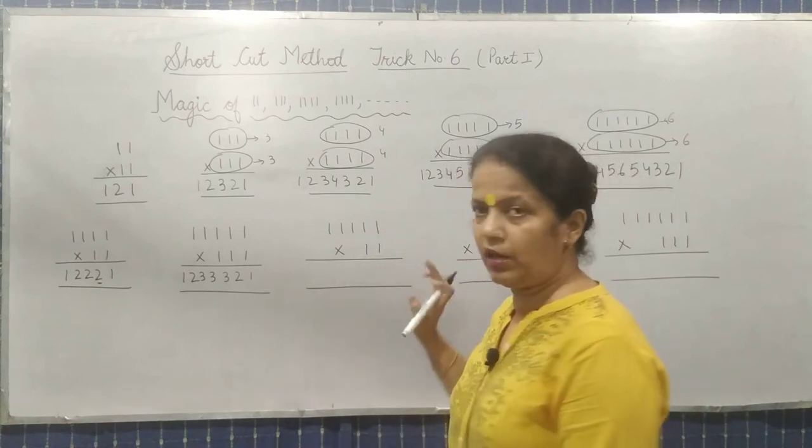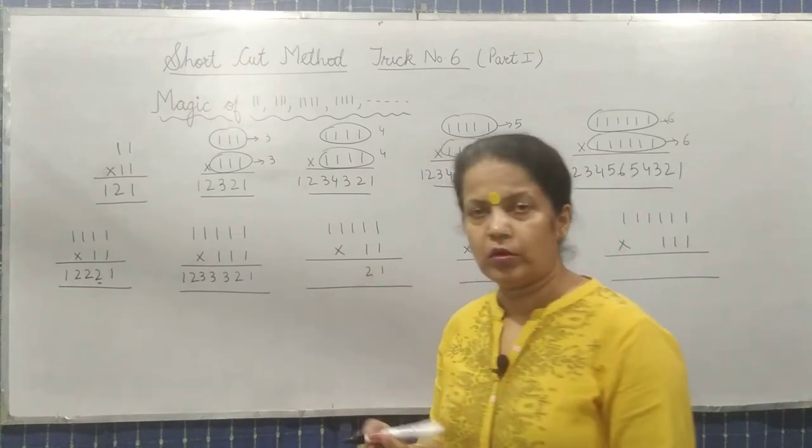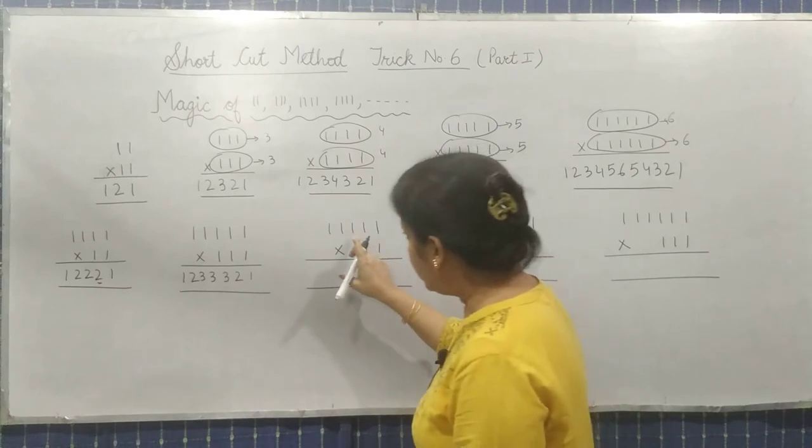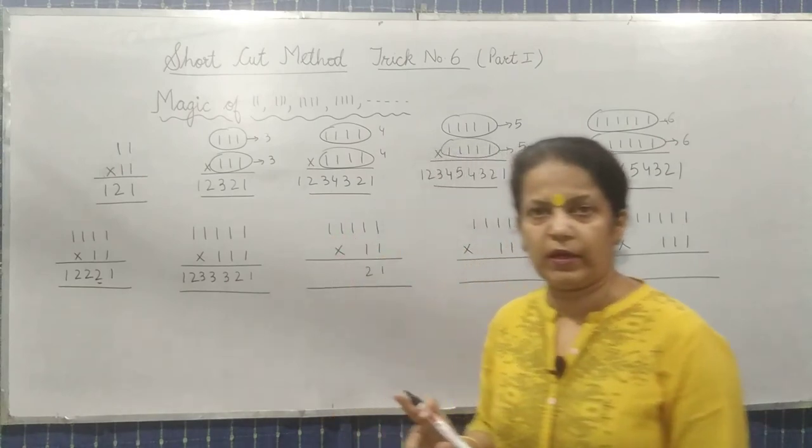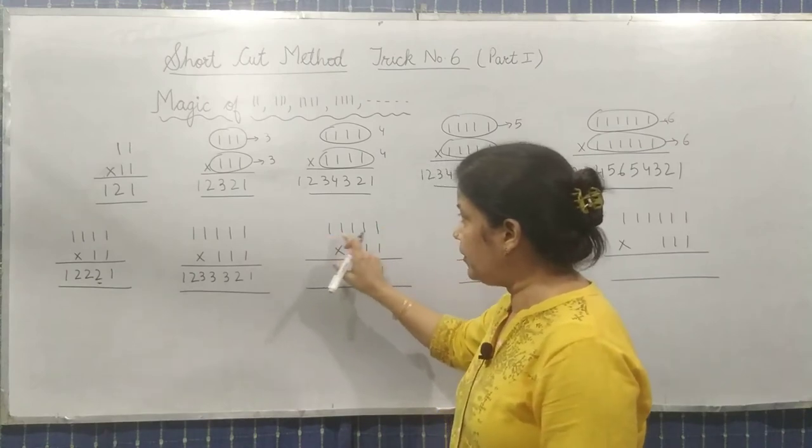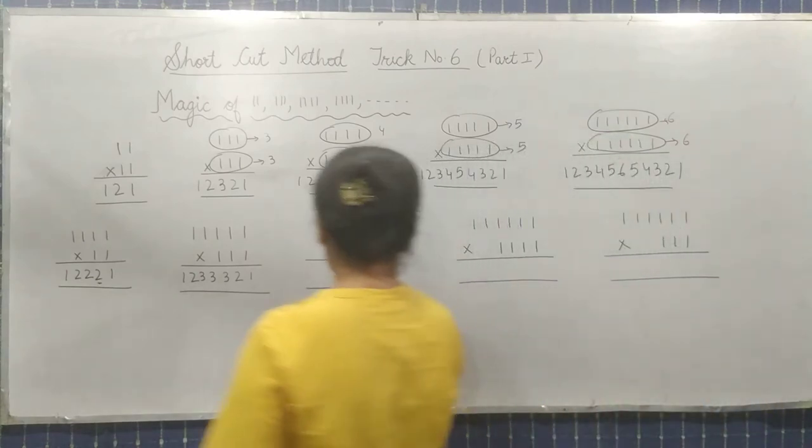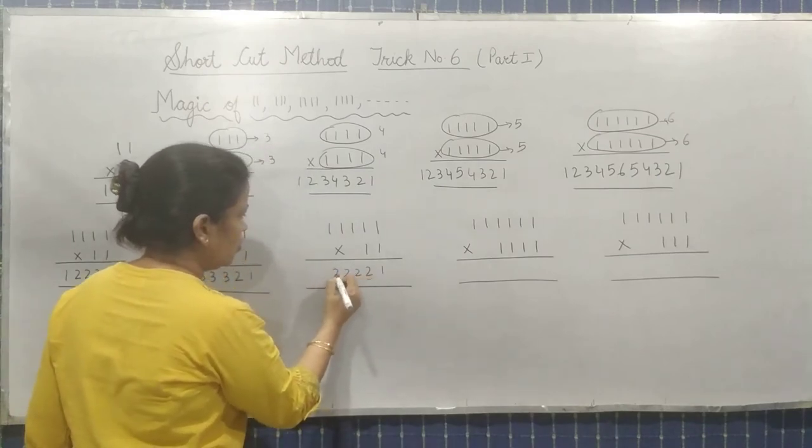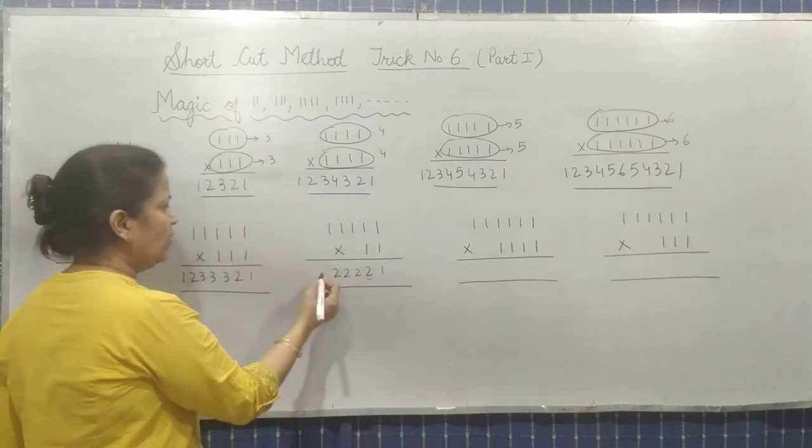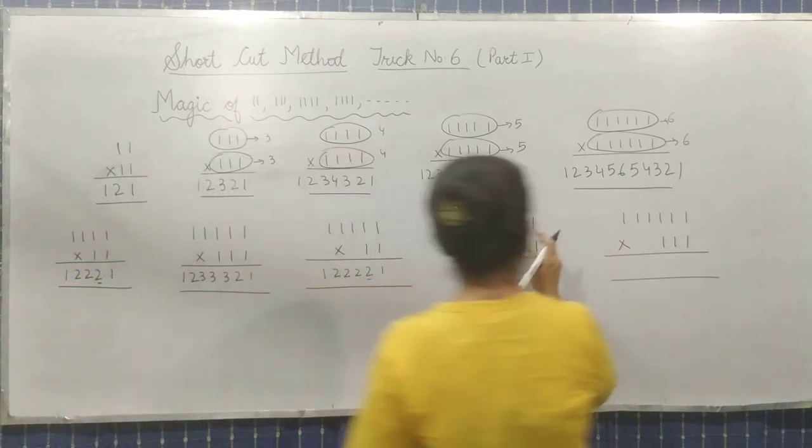2 ones are same. So you will write it 1, 2, two times. Now here 3 ones remain. So this last number, as many ones remain, that many times you will repeat. So you will write it 2, 2, 2. Now from here you will go in decreasing order. Look over here.